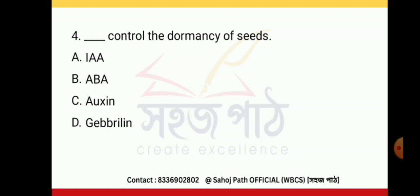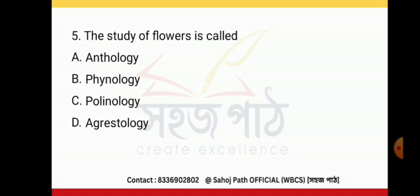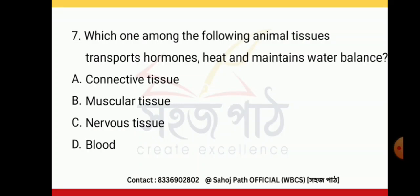Dormancy in seeds is controlled by ABA. The study of flowers is called anthology. The study of fruits is called pomology. Which animal tissue transports hormones, heat, and maintains water balance? Muscular tissue.